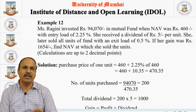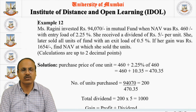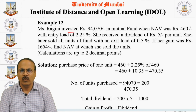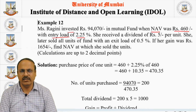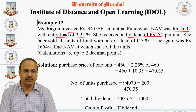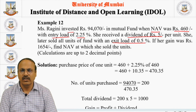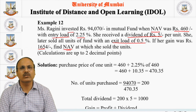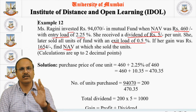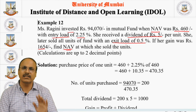The first problem from our study material goes like this: Ms. Ragini invested Rs. 94,070 in a mutual fund when the NAV of the fund was Rs. 460 with an entry load of 2.25%. She received a dividend of Rs. 5 per unit. She later sold all units of the fund with an exit load of 0.5%. If the gain was Rs. 1654, what was the NAV when she sold the units? When solving problems in mathematics, first write down what is given, then use simple formulas step by step.